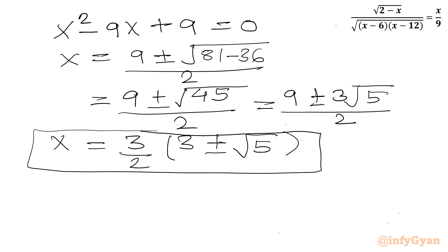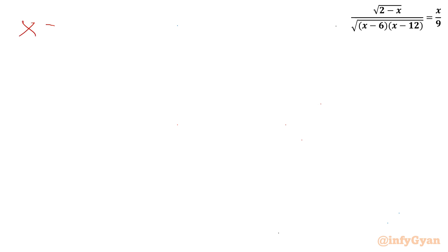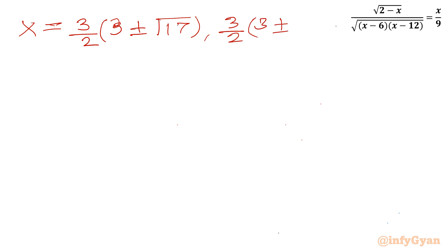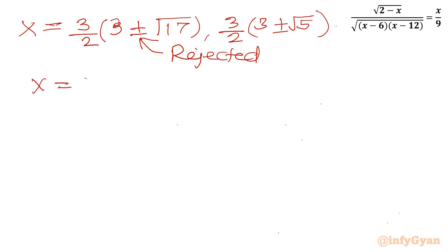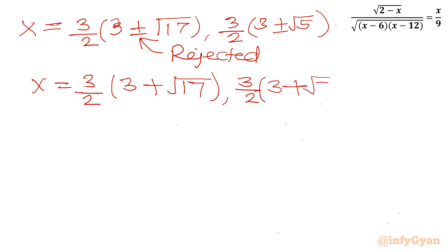We accept only those solutions which lie in the interval 0 to 2. The four values are: (3/2)(3 plus root 17), (3/2)(3 minus root 17), (3/2)(3 plus root 5), and (3/2)(3 minus root 5). Since root 17 is greater than 3, the value (3/2)(3 minus root 17) is negative, so it is rejected. The remaining three candidates are checked against the interval 0 to 2.